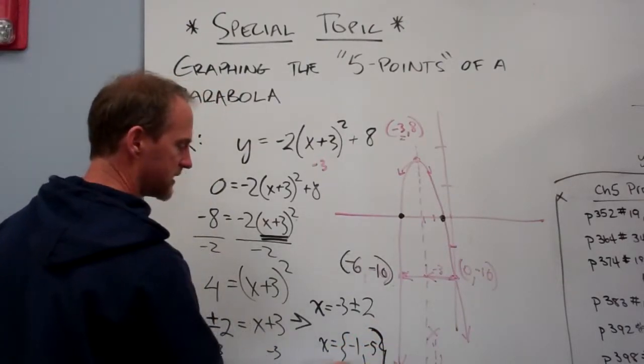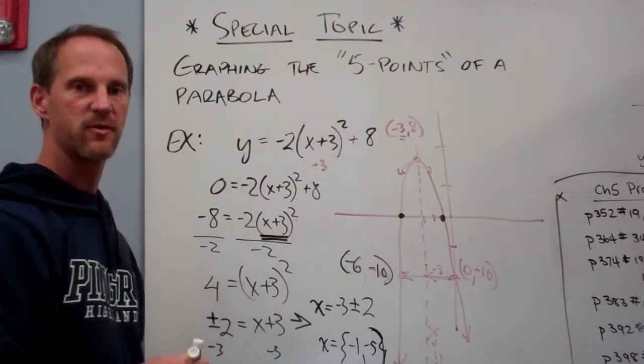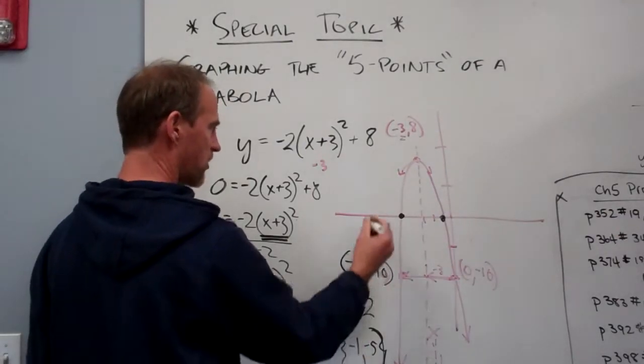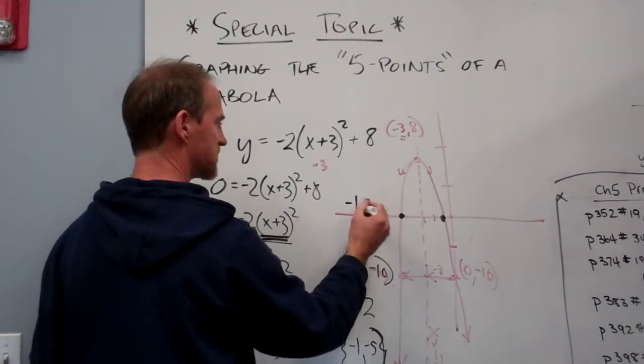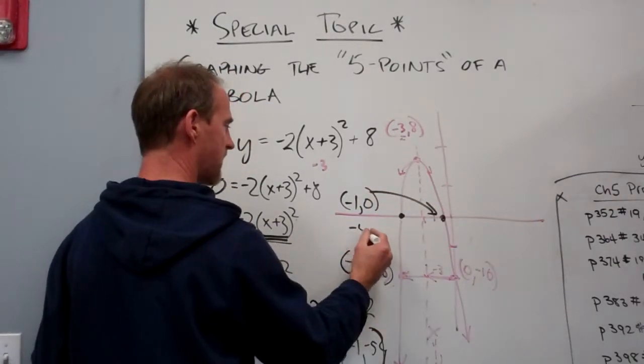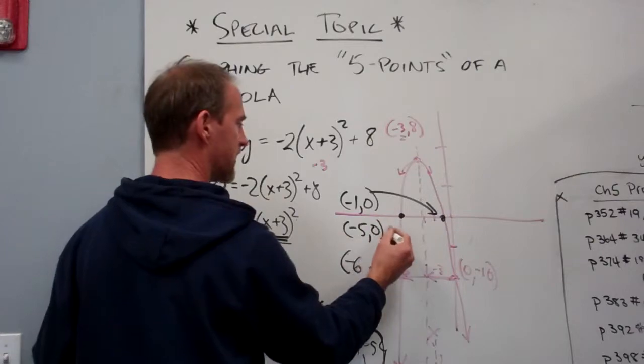Oh, that should be a bracket. Don't make that into parentheses or it will look like one single point. The two points are negative 1 comma 0, that's that one, and then negative 5 comma 0, that's that one.